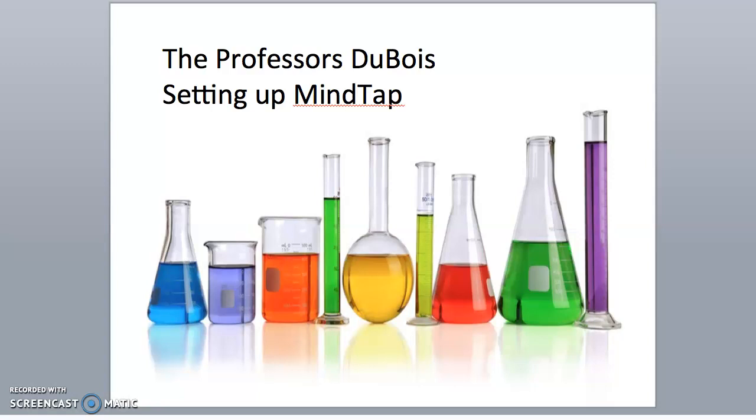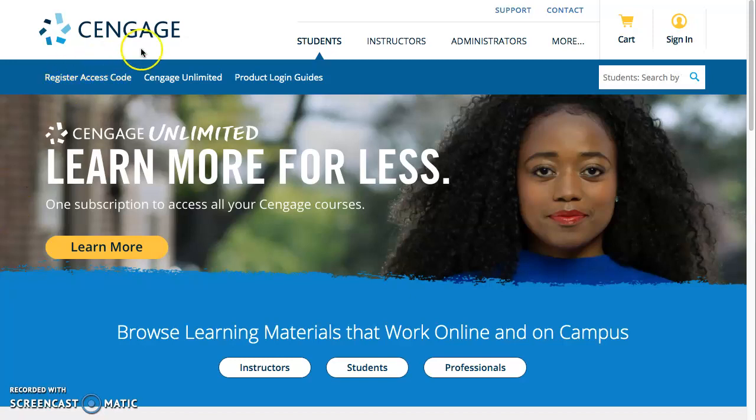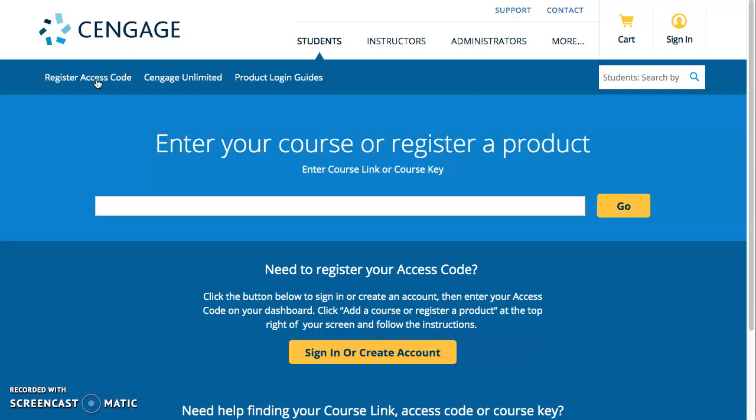MindTap is a Cengage product and can be accessed from Cengage.com. You will need to create a student account with your Oneonta email. If you already have an account from a previous course, you may continue to use it. You will also have the option of a free trial. We recommend using this option as you can get started with the material before purchasing access to the software.